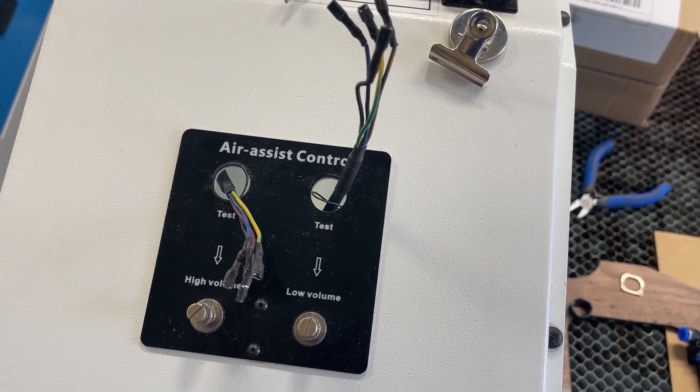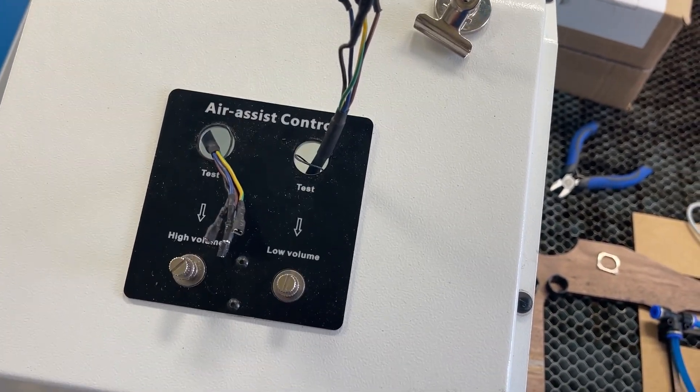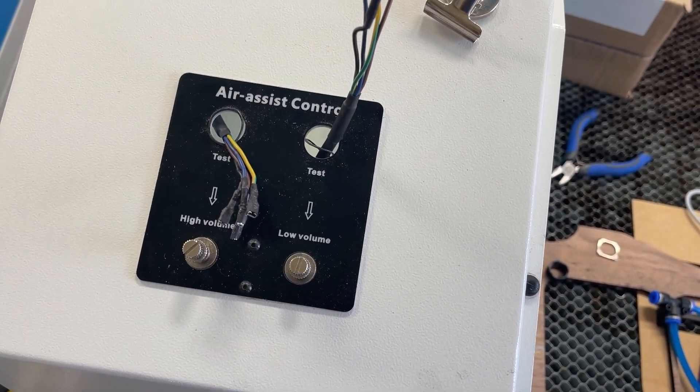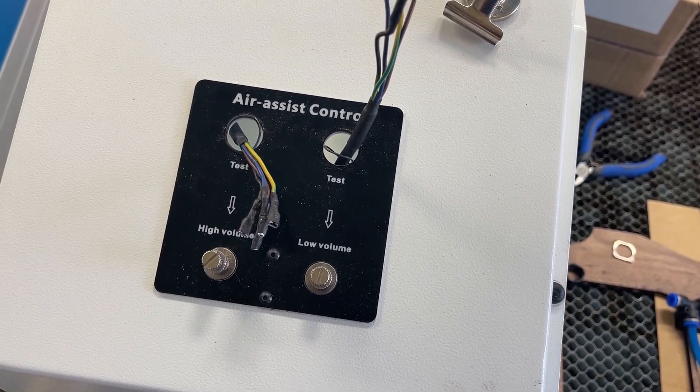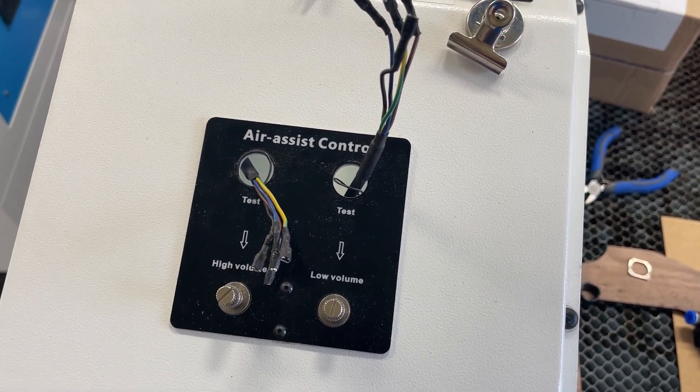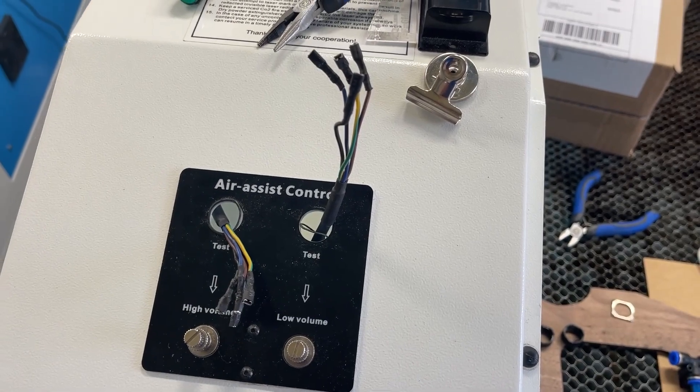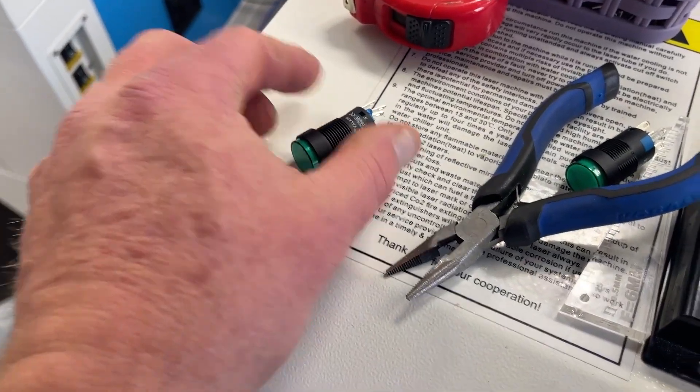Okay. So, they're both back off or they're off now back through the hole so I can make sure that I know which one's which. You know, obviously high is on the left, low is on the right. Now, I'm going to install the switches into the housing.